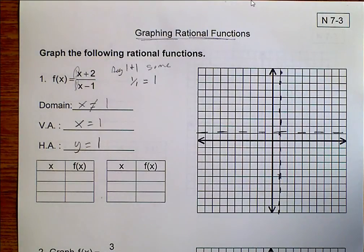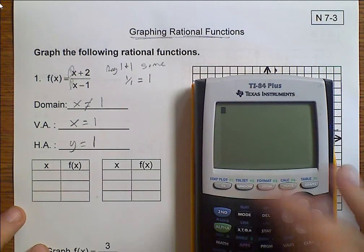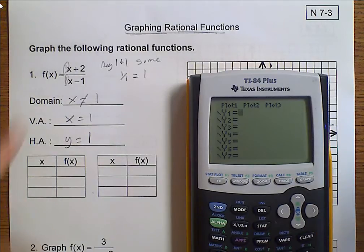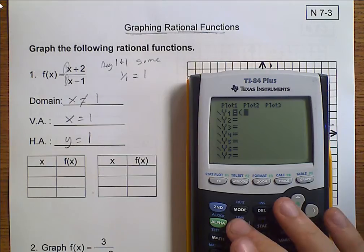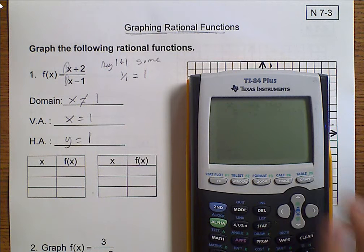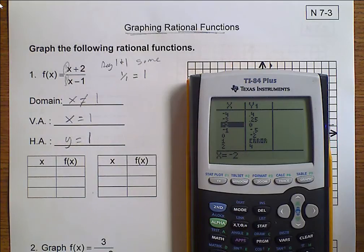Now, horizontal asymptote, we look at our degrees, which is 1 and 1. Again, because they're the same, we look at our coefficients, which are 1 and 1, which equals 1. So we have a horizontal asymptote at y equals 1. So, you again draw another asymptote. Now, here's where we're going to use our calculator to grab just a few quick points.